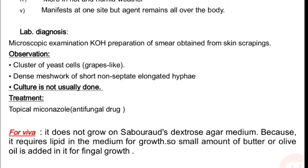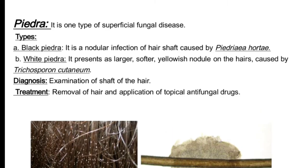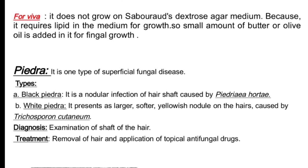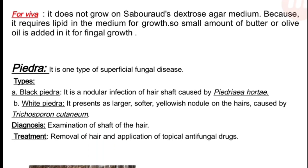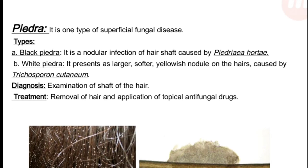Malassezia furfur does not grow well on standard Sabouraud dextrose agar. So a synthetic medium is prepared by adding butter or olive oil to it, where the fungus grows well.